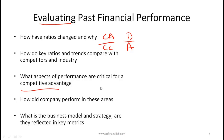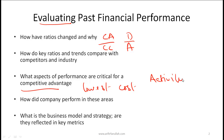As an example, if the competitive advantage in a given industry has to do with being the lowest cost provider — which would typically be a mature industry — then the ratios you are looking at, among others, will be the various activity ratios, which give a sense for how efficiently the company is running. You will also look at things like the operating margin.